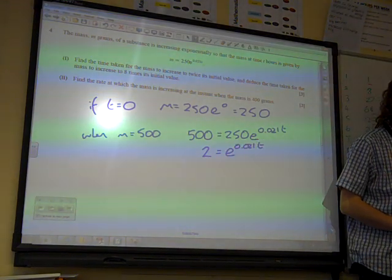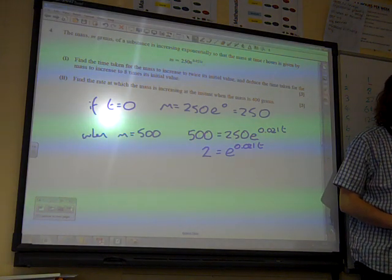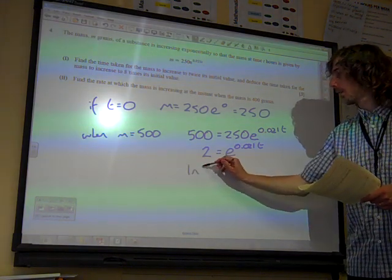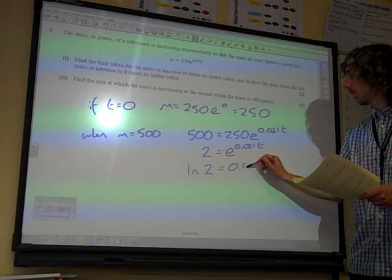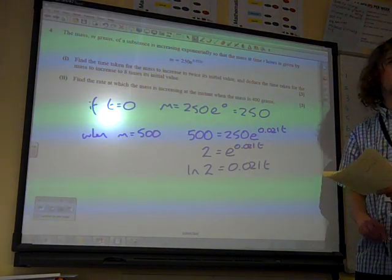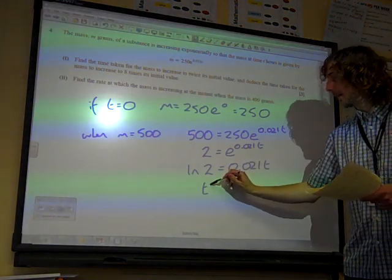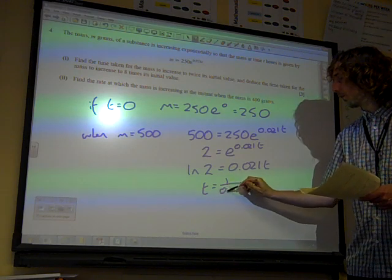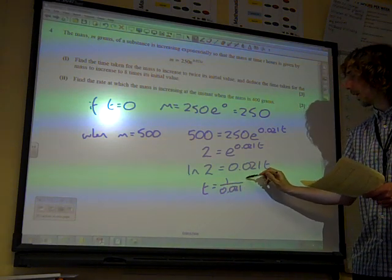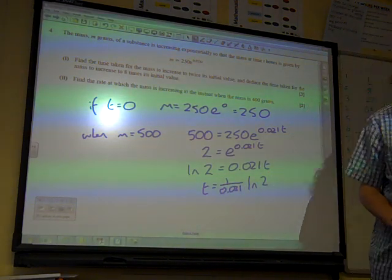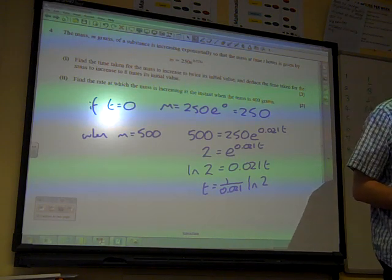And then we know what we do with this, don't we? We take a log to both sides to get natural log of 2 equals 0.021t. So t is 1 over 0.021 times ln 2. At this point, now we can go with the calculator.